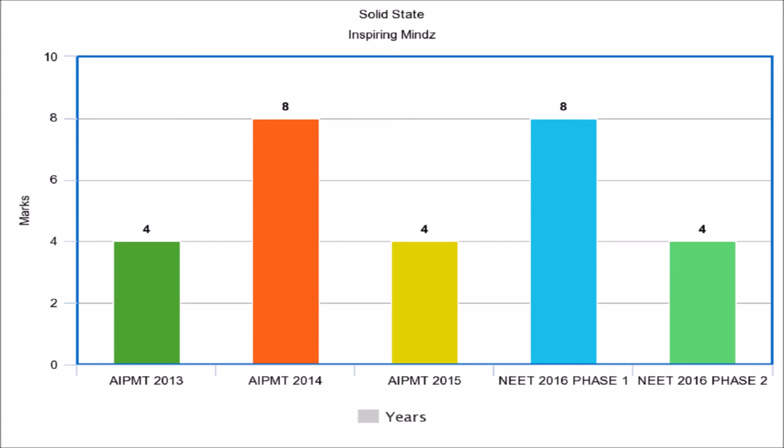The easiest topic of physical chemistry is solid state. In AIPMD 2013, AIPMD 2015, and NEET 2016 Phase 2, 4 marks of questions were asked, which increased to 8 marks in AIPMD 2014 and NEET 2016 Phase 1.